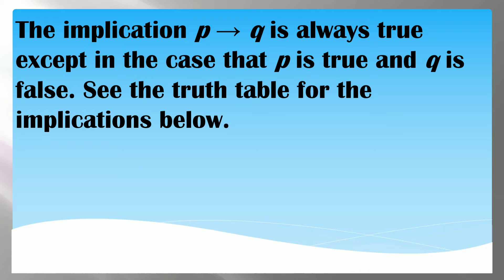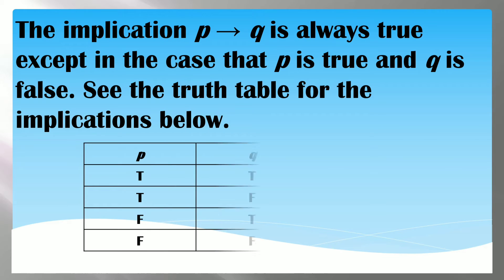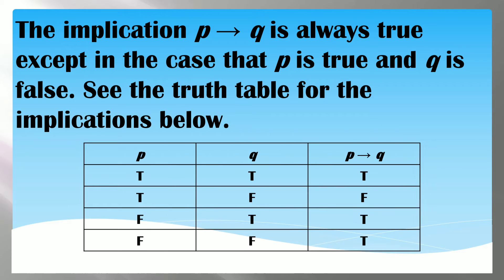Looking at the truth values for the implication: when our hypothesis is true and our conclusion is false, the implication is false — that is the only case where it becomes false. The rest of the cases are all true.